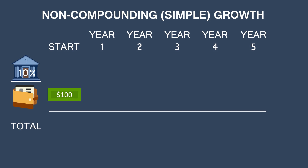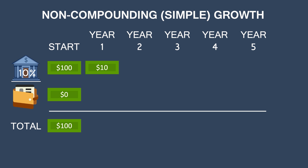Before we talk about compounded or exponential growth, let's look at the simpler case: simple interest. This is the idea that you give the bank some money, they give you some interest, but you take back that interest — you're not going to reinvest with them. So in this example, you start with $100, and the bank promises to give you 10% interest on those $100 every single year. You hand $100 to the bank, so you have nothing in your wallet. After a year, the bank gives you $10, you put it in your pocket, but leave the original $100 in the bank. In total, you now have $110.